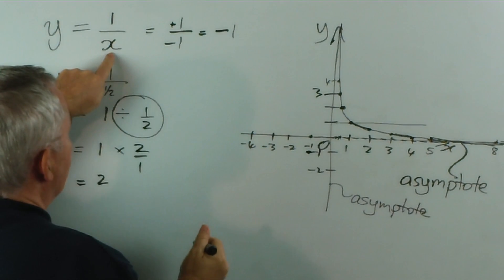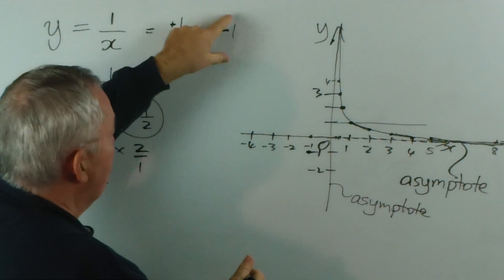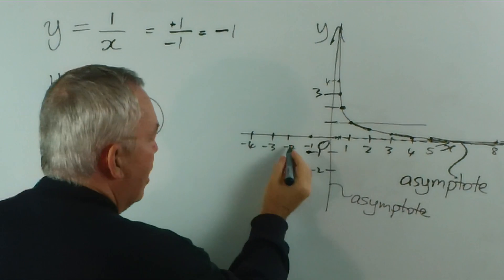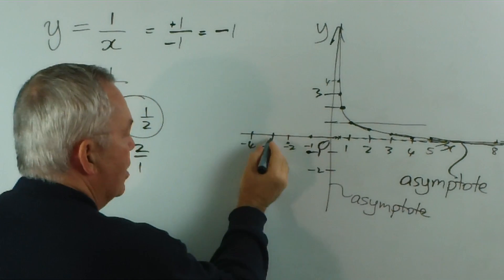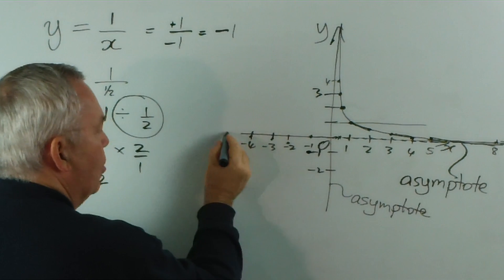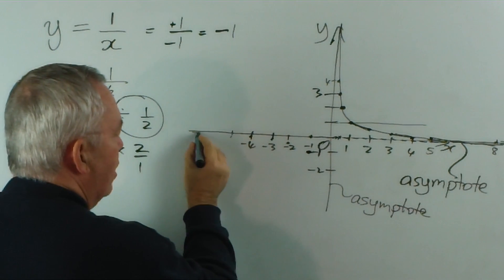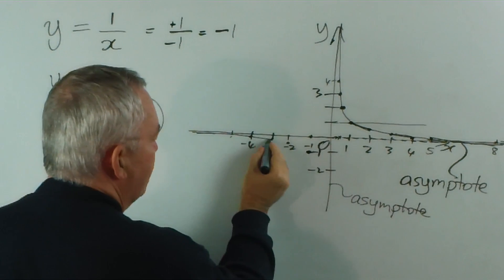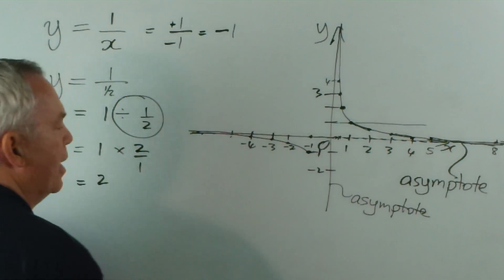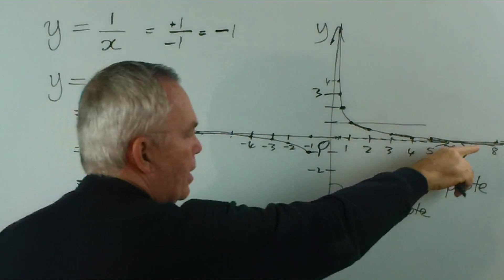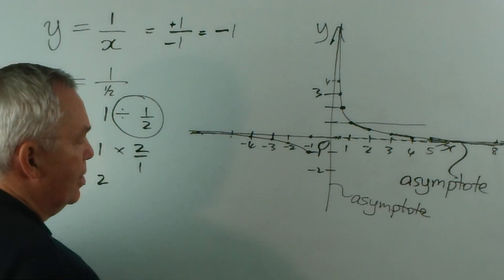If I put in minus 2, by the same logic, I would get an answer of negative 1 half. Minus 3, negative 1 third. Minus 4, negative 1 quarter. And you can see that as far as we go out here, this graph will get closer and closer and closer to the x-axis, in the same way that it did out here on the positive side of the x-axis.